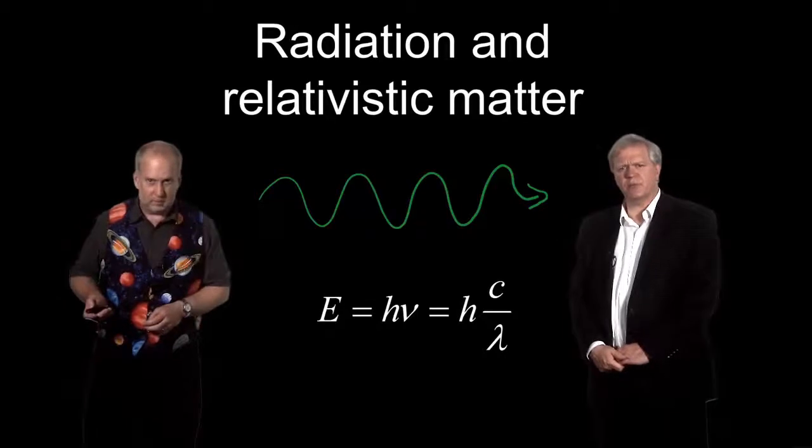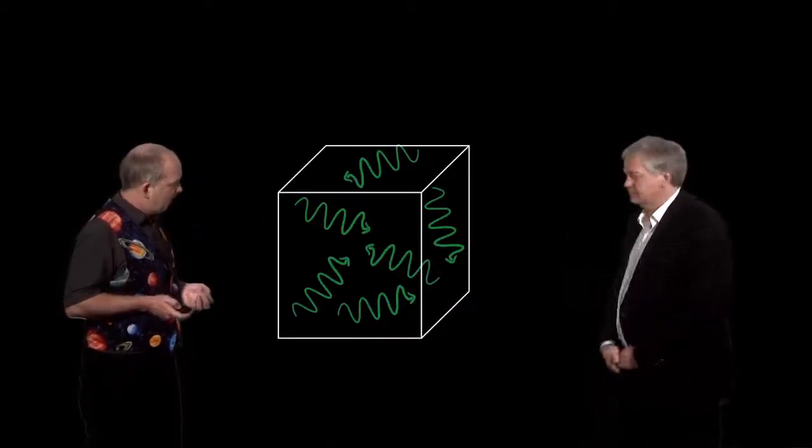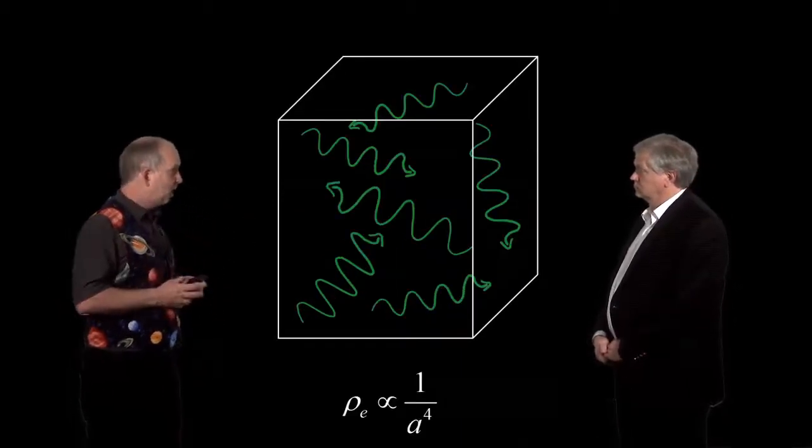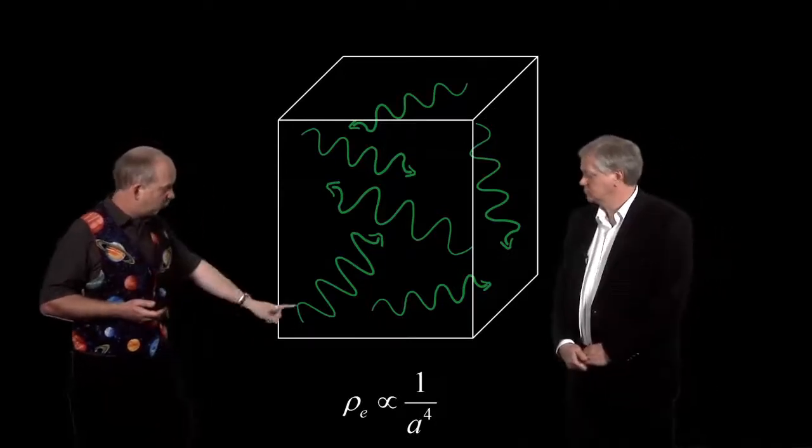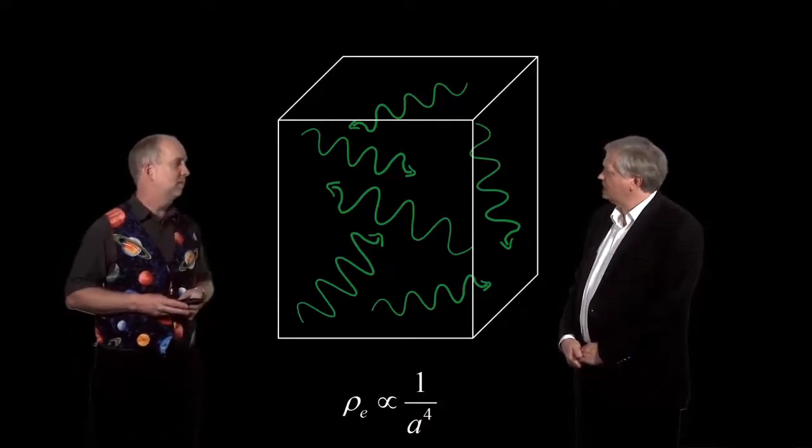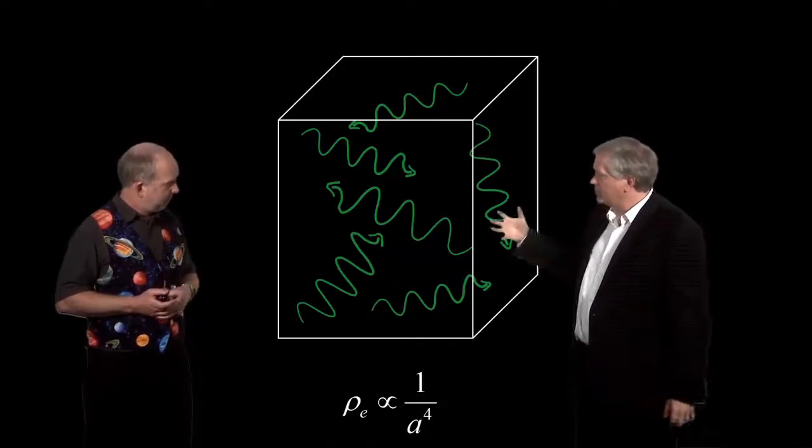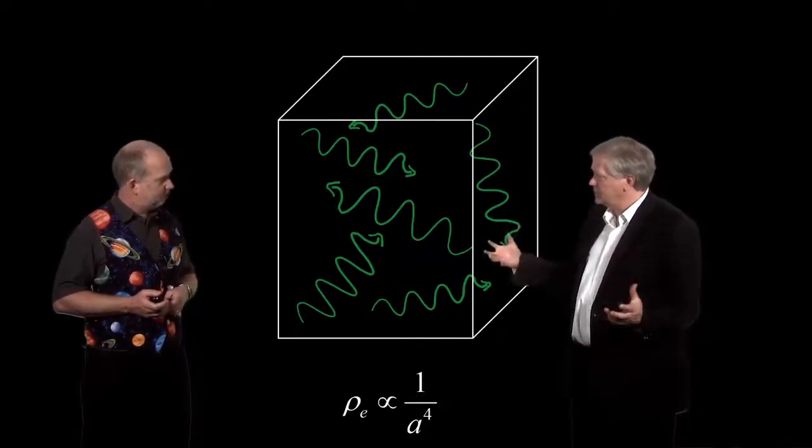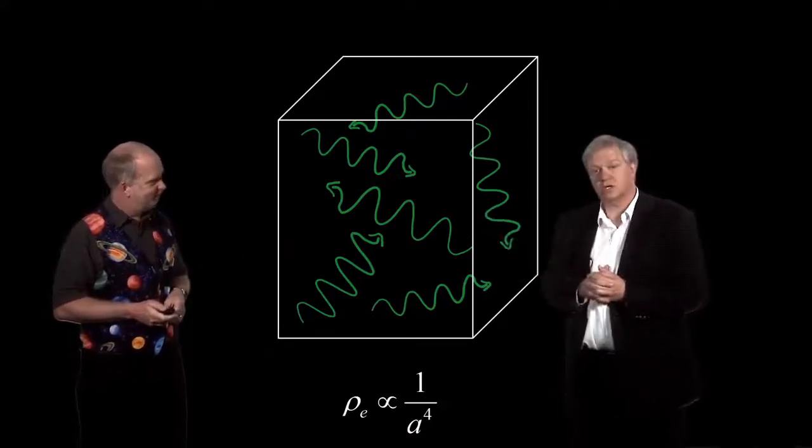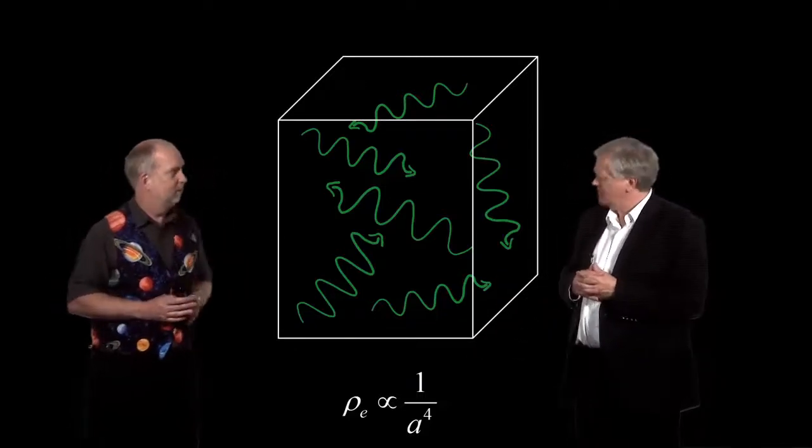Now we've got a box full of, say, photons or waves. As space gets bigger, the box is going to get bigger. You've got the same number of photons in the box. So the mass density is going to go as A³, but in addition, each photon's lost energy. And it's lost energy by how much the box is magnified. So you've got the volume of the box, A³, and then the length of the box, which stretches the photon, gives you an extra factor of A. So, 1 over A⁴.